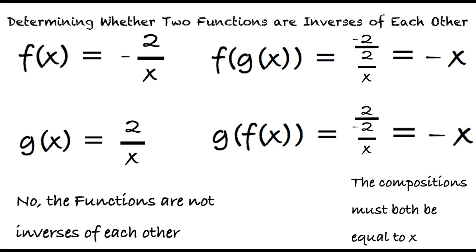I think I'm starting to understand this now. To find the inverses of two functions, we first solve for the compositions of the two functions with each other, and then check to see if both compositions simplify to x. If they do, then we can say the functions are inverses of each other. If the compositions do not reduce to x, then the two functions are not inverses of each other.